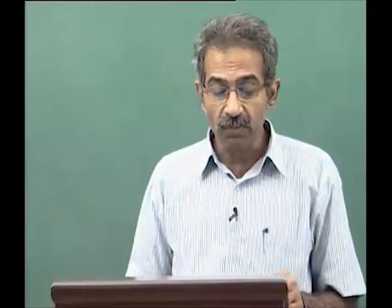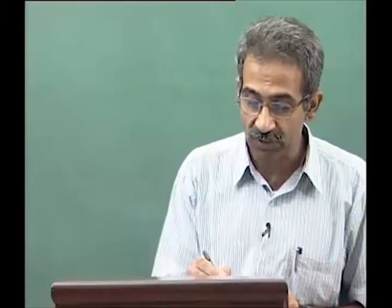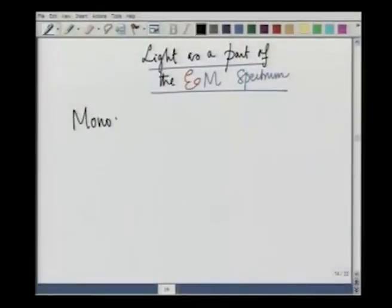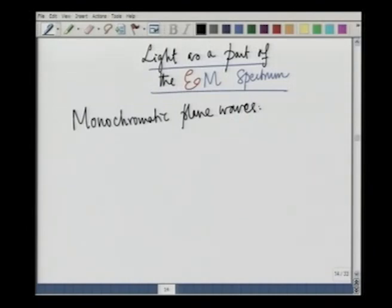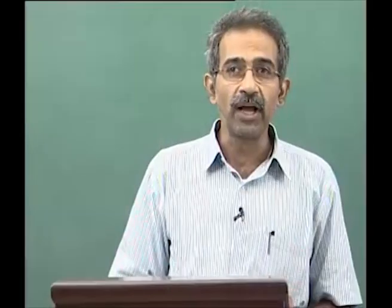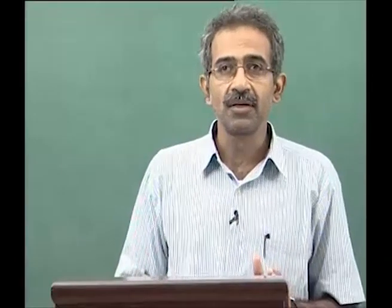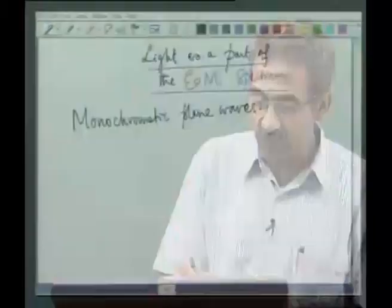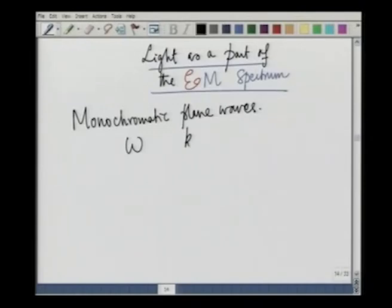In the last lecture, we looked at Maxwell's equations in free space and studied the solution in great detail. We simplified by studying a class of solutions called monochromatic plane waves — waves of a given frequency travelling along a given direction. We characterized the wave in terms of frequency omega and wave number k, and derived the relation omega equal to k c.